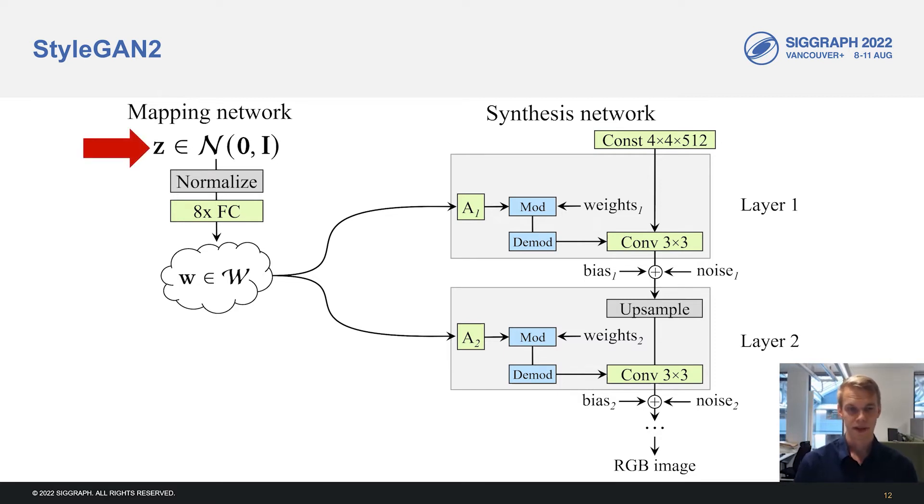On the left, in the so-called mapping network, we sample a vector of random number z, called the latent vector, from a normal distribution. These random numbers specify the overall appearance of the image. The latent vector z is fed through a sequence of layers to produce a secondary latent vector or intermediate latent vector w, which has better disentanglement properties. This vector w is then fed to every layer of the synthesis network that produces the actual output image. For example, on the first layer, w is mapped through an affine mapping to produce a style vector s. This is the style in StyleGAN. And this vector is then used to control the convolution operation on this layer. Finally, we have spatial noise maps that produce spatially localized random variation to the image.